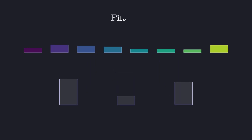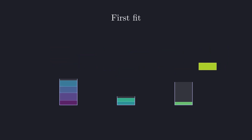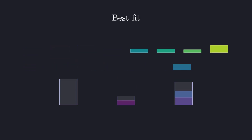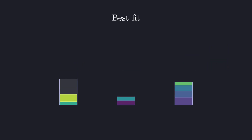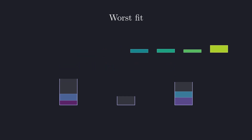To solve this issue there are many different algorithms that can be used. One such is the first fit algorithm, which takes the next weight and packs it in the next available bin. Best fit assigns the weights to the smallest bin that it fits in — so if you're packing several travel bags you would start with the smallest one and completely fill it.